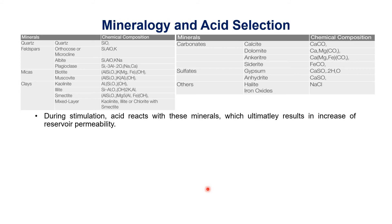Here we see the mineralogy and acid selection relationship. During stimulation, acid reacts with these minerals, which ultimately results in an increase of reservoir permeability. The main objective of well stimulation is to increase productivity or increase formation permeability. The acid reacts with the formation, dissolving it, which results in increased permeability. So in order to understand the interaction of acid with the formation, we need to understand the mineral composition of the rock we are going to treat.